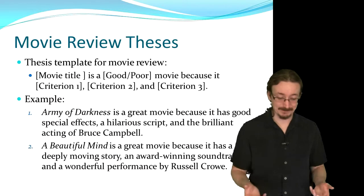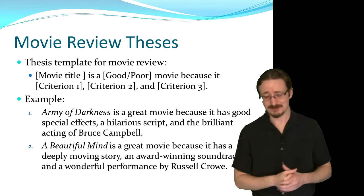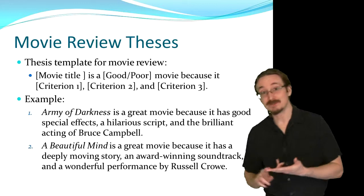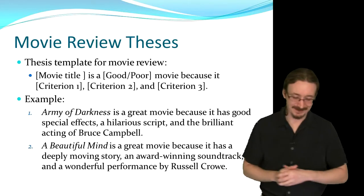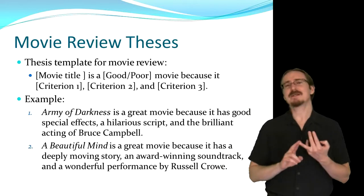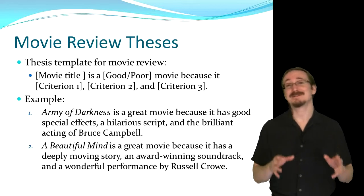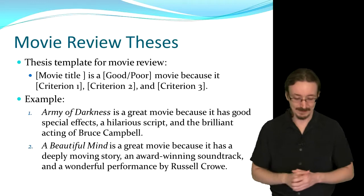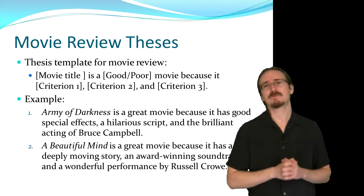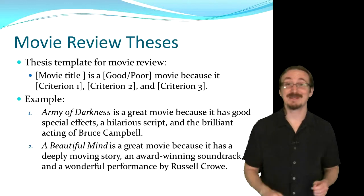Now it's time to write your thesis statement. I've got a rough template here for you to follow — you don't have to follow it exactly, but it's an idea to get you started on your structure. The template is: '[Movie title] is a good/poor movie because it [Criterion 1], [Criterion 2], [Criterion 3].' For example: 'Army of Darkness is a great movie because it has good special effects, a hilarious script, and the brilliant acting of Bruce Campbell.' Or: 'A Beautiful Mind is a great movie because it has a deeply moving story, an award-winning soundtrack, and a wonderful performance by Russell Crowe.' In each case, I've picked three criteria I want to talk about and indicated they represent excellence in their areas.